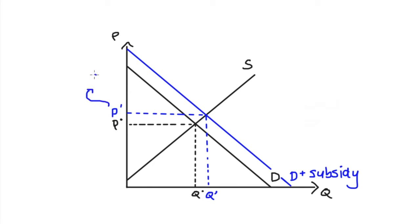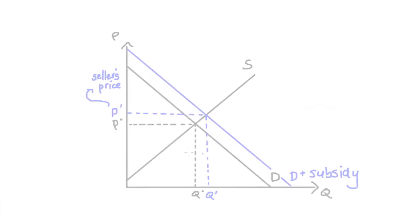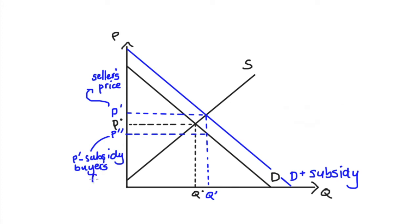Of course, the consumers don't have to pay this price because after they've traded in the market, they can go to the government and the government gives them some money back. So per unit, the consumers don't pay P prime — they pay some other price, let's call it P prime prime, which is P prime minus the subsidy. This is the buyer's price per unit.